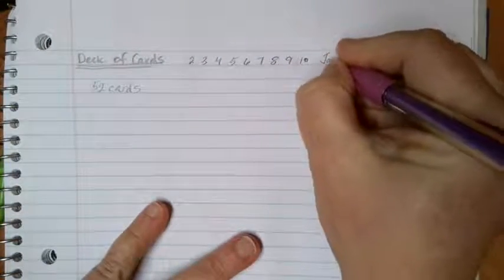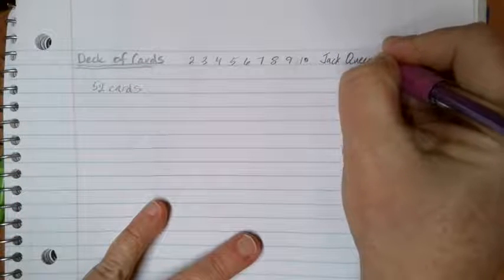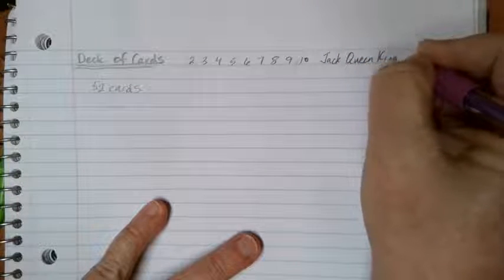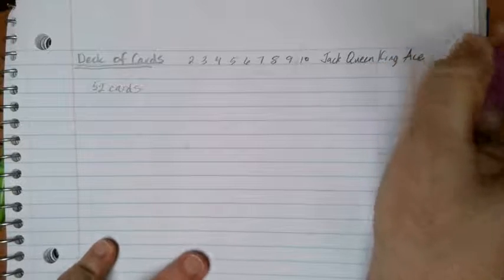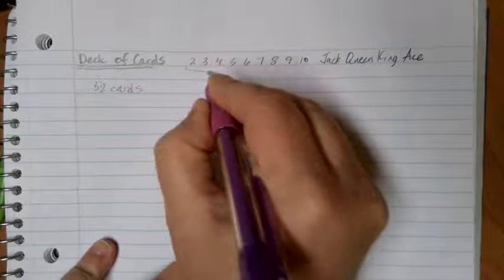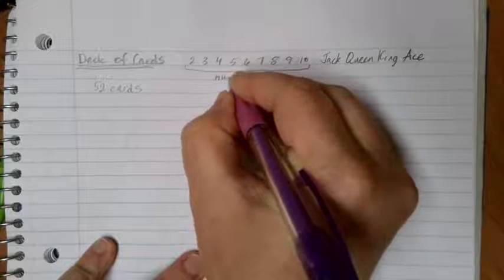Then we have what's called a jack, a queen, and a king. And then, of course, we have the aces. The numbers from 2 to 10 are referred to as number cards.